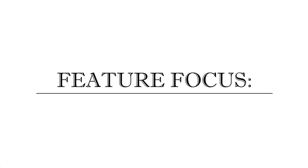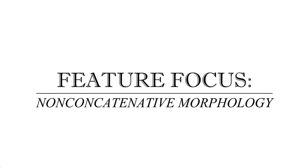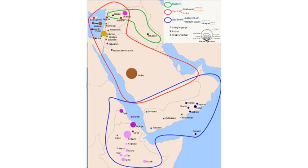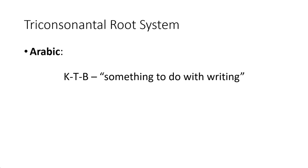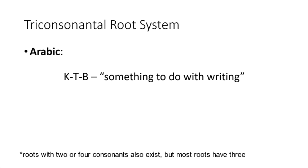There are few features more captivating and enigmatic than the triconsonantal or triliteral root system. In the Semitic languages, like Hebrew, Arabic, and Syriac, a root isn't a concrete, pronounceable form — it's just a string of three consonants associated with a particular semantic domain.